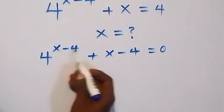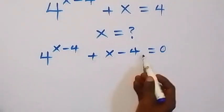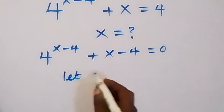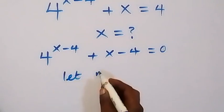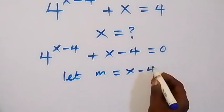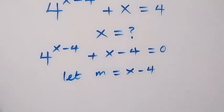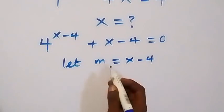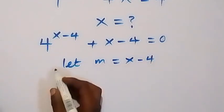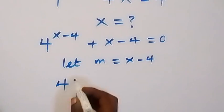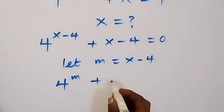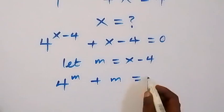Then we have x minus 4 here, x minus 4 here. So let the letter m be equals to x minus 4. Then we can substitute m now instead of x minus 4, and this equation becomes 4 raised to the power m, then plus m, now equals to 0.